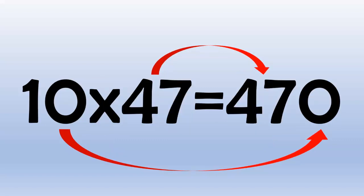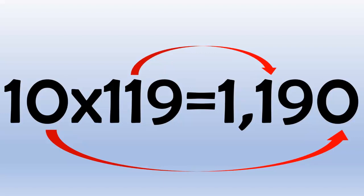10 times 47 is 470 because 47 with a 0 on the end is 470. 10 times 119 is 1190 because 119 with a 0 on the end is 1190.